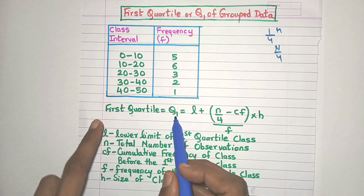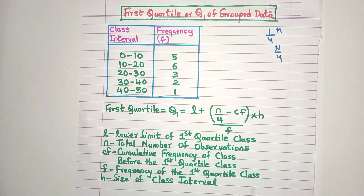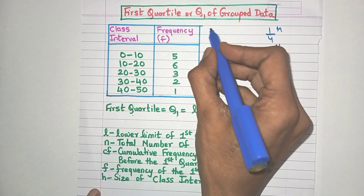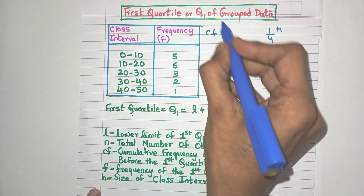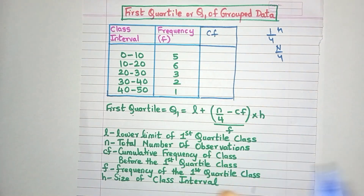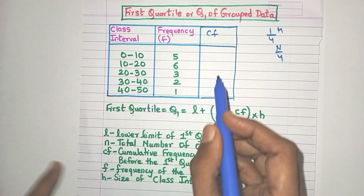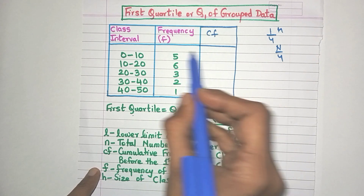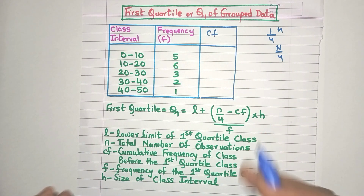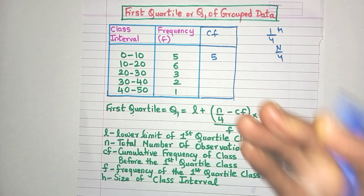This is the formula for Q1, but before we can use it we need one more column known as the CF column — the cumulative frequency column. CF means cumulative frequency, which means added frequency. For the first class interval, the CF value is the same as the frequency value because there is no previous frequency to be added. So it will be 5.